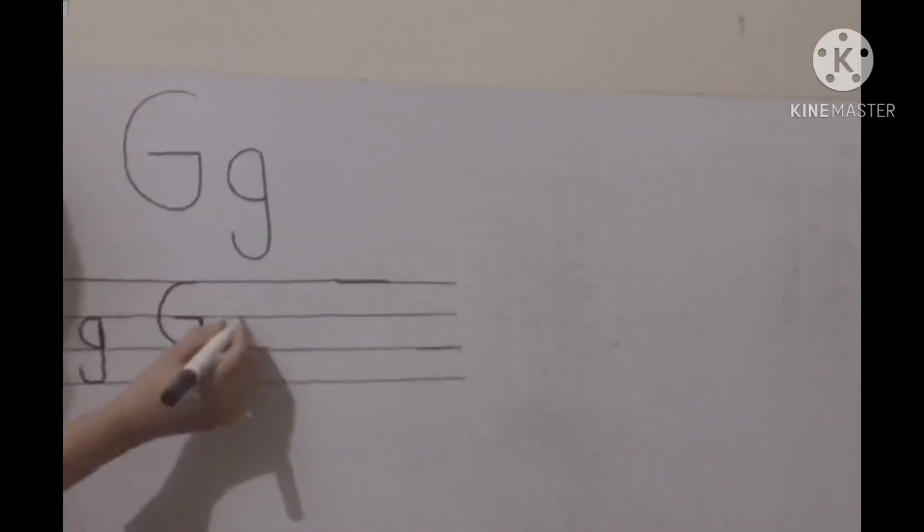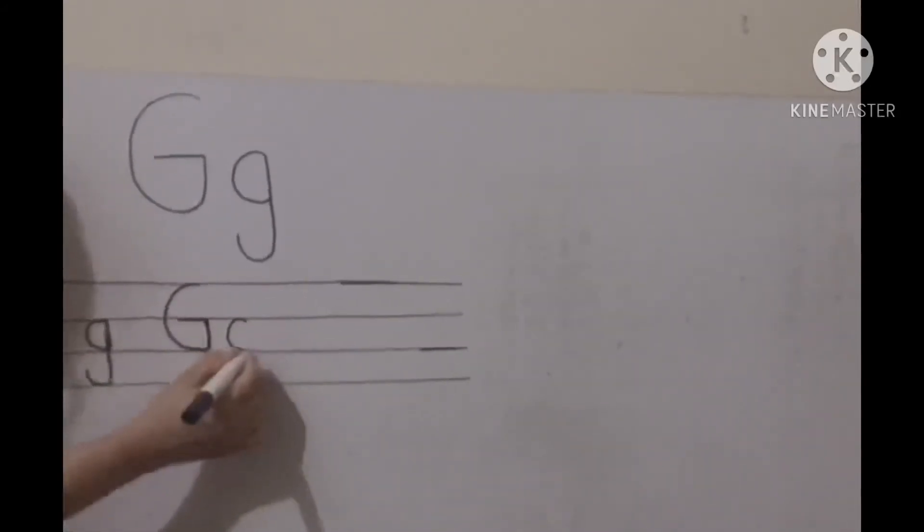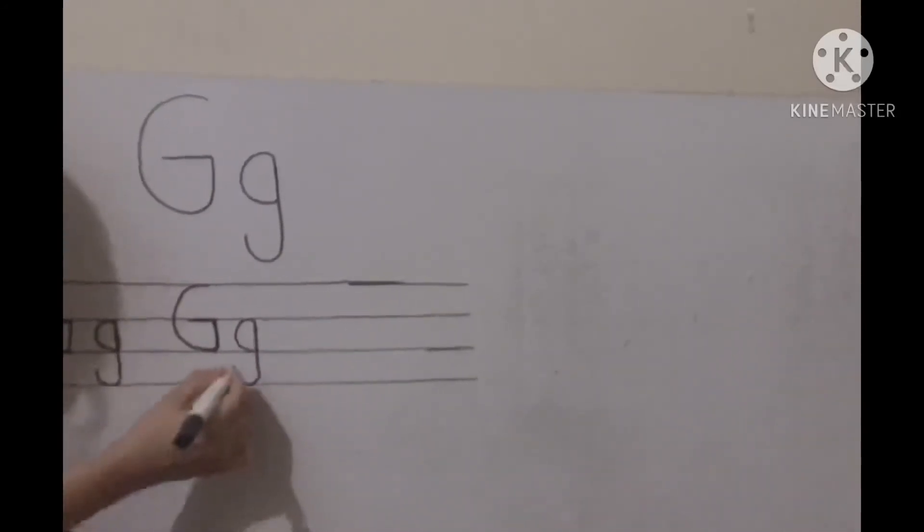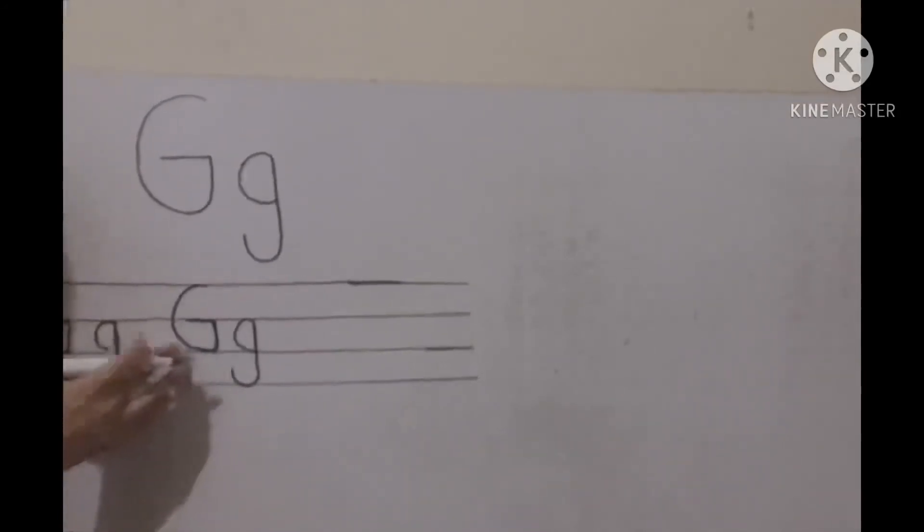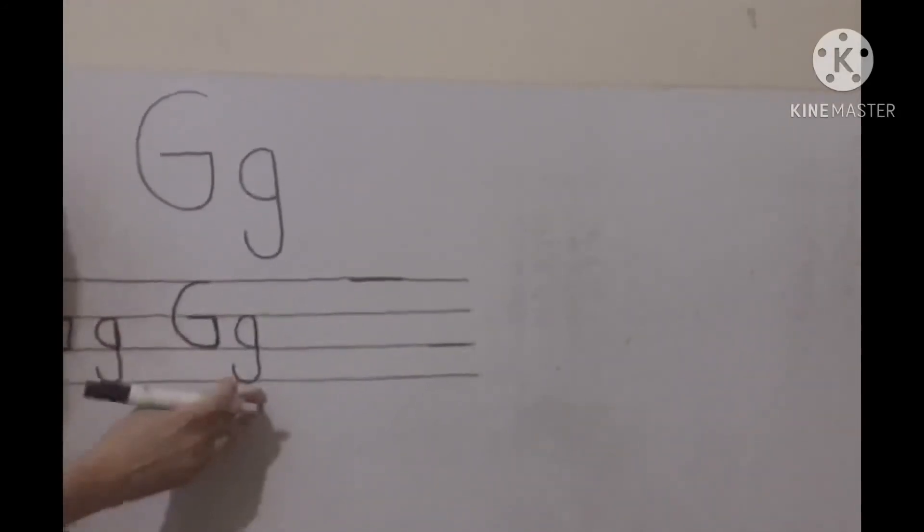And for the small one, make a semicircle, then go up, down, and touch the bottom line. So this is capital G and this is small g. Right.